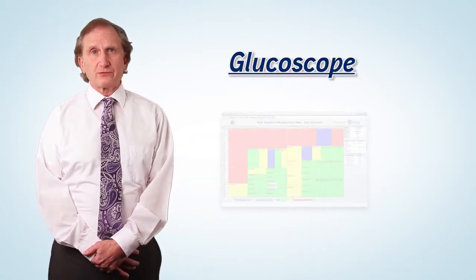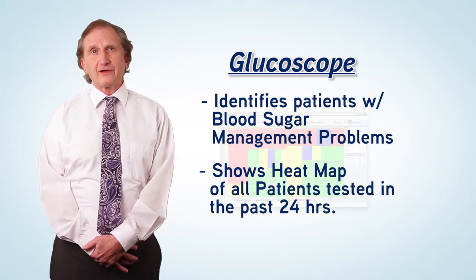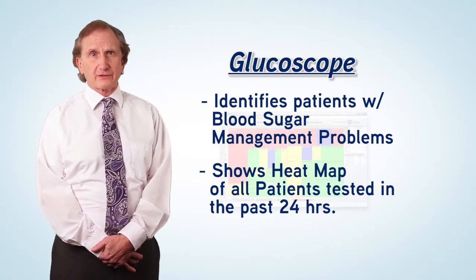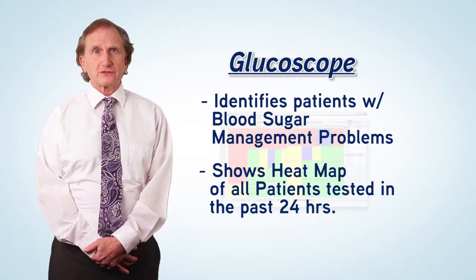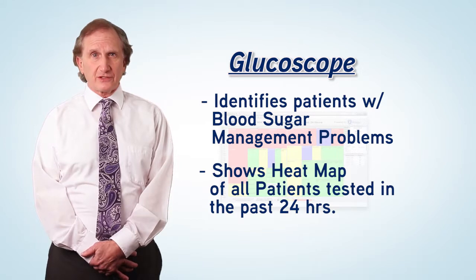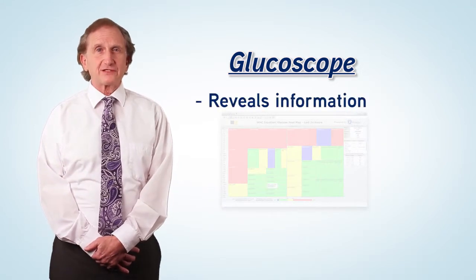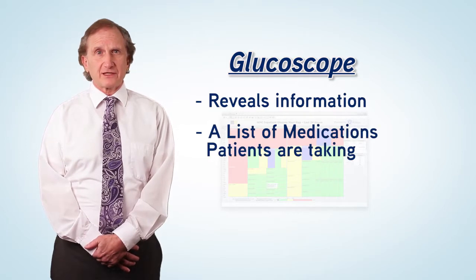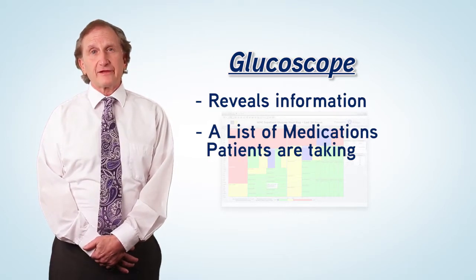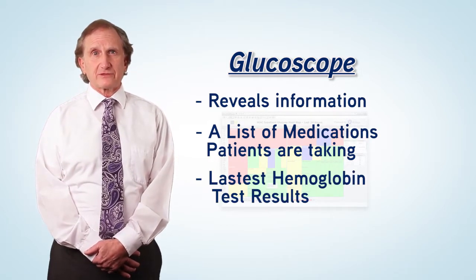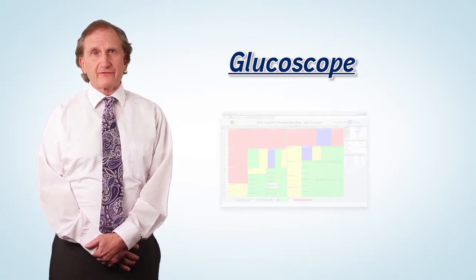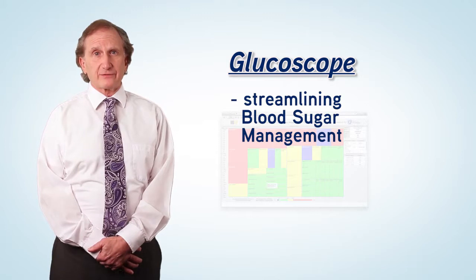The Glucoscope tool for identifying patients with blood sugar management problems shows a heat map of every target patient's blood glucose results from the past 24 hours. A check box control allows clinicians to focus in on relevant units and to see detailed blood sugar test results, a list of diabetes medications the patient is on, and the latest hemoglobin A1c test result. The Glucoscope has been an effective tool for streamlining efforts to improve blood sugar management at MedStar.